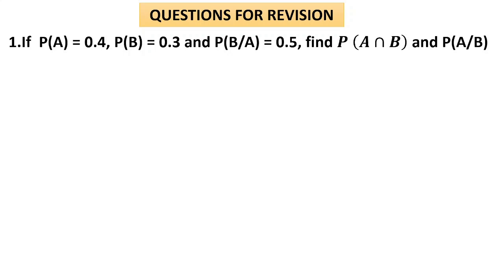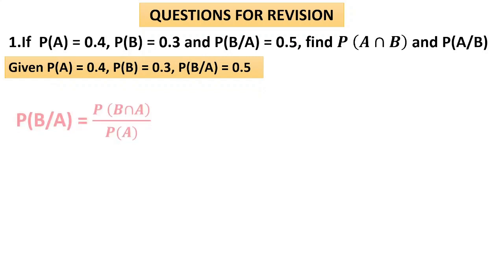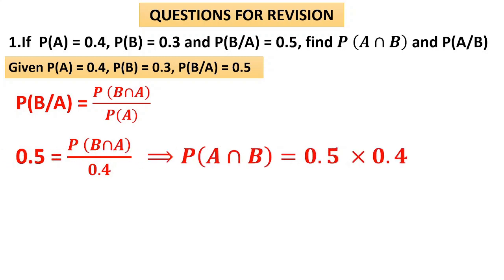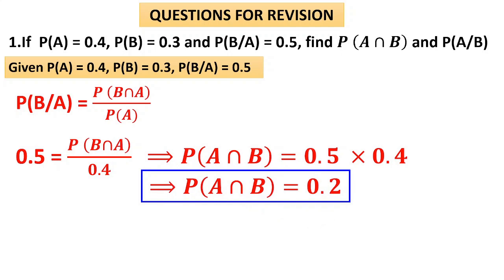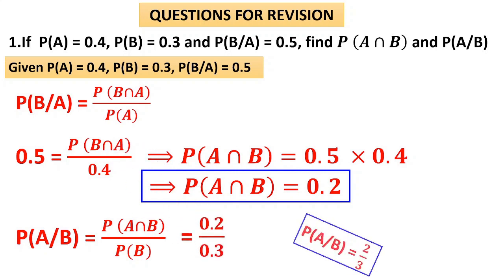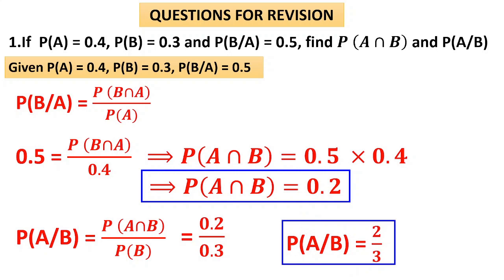Let us move to a numerical problem where we use the formula directly. Given: P(A) = 0.4, P(B) = 0.3, P(B|A) = 0.5. Find P(A∩B) and P(A|B). Using P(B|A) = P(A∩B) / P(A), we get 0.5 = P(A∩B) / 0.4, so P(A∩B) = 0.2. For P(A|B) = P(A∩B) / P(B) = 0.2 / 0.3, the answer is 2/3.